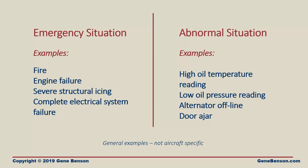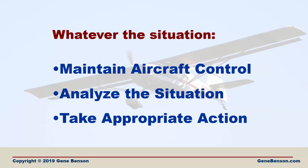There are basically two dangers inherent in abnormal situations. First, there is the distraction factor — many accidents have been attributed to a distraction produced by an abnormal situation. And second, many abnormal situations can become emergencies or can lead directly to an accident if they are ignored or handled inappropriately. Whether we have an emergency or an abnormal situation, we must make our first priority controlling the airplane, then analyze the situation and take appropriate action. We must fly the airplane regardless of what else is happening.